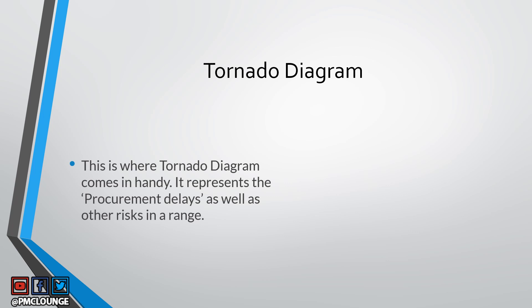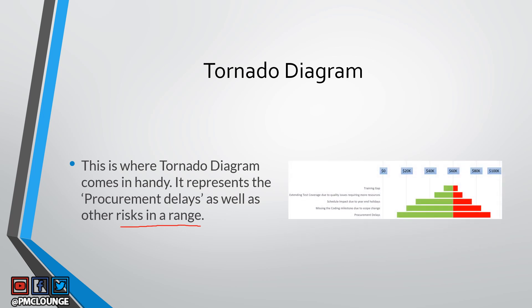The tornado diagram represents the risk of procurement delays not as an absolute value but as a range. Here is how a tornado diagram looks — you can see procurement delays represented with a range, rather than a single fixed value.